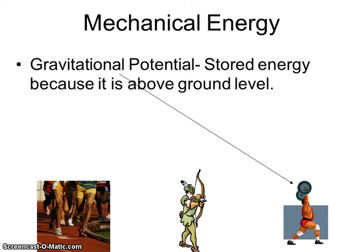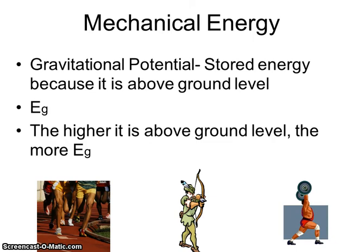The last one is gravitational potential energy — this is stored energy whenever an object is above ground level. We say ground level, not the ground, because if it's on a hill, it's still above ground level. Here you can see a guy lifting a weight — the weight itself would have gravitational potential energy. We use Eg for gravitational potential energy. The higher it is above the ground, the more gravitational energy it has.